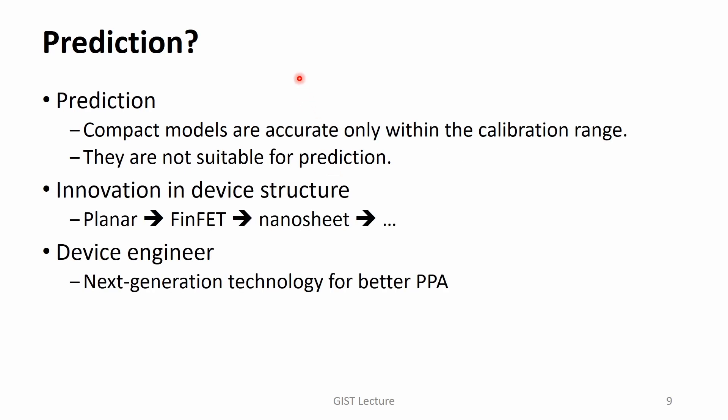With such an accurate compact model, can we develop the next-generation technology? Unfortunately, compact models are accurate only within the calibration range and are not suitable for prediction. More importantly, in these days the device structure itself has changed greatly from a planar MOSFET to a FinFET and a nanosheet MOSFET. What will be the next one? As a device engineer, we must find a path toward the next-generation technology with advantages in terms of power, performance, and area. We need a more detailed way to describe a semiconductor device.